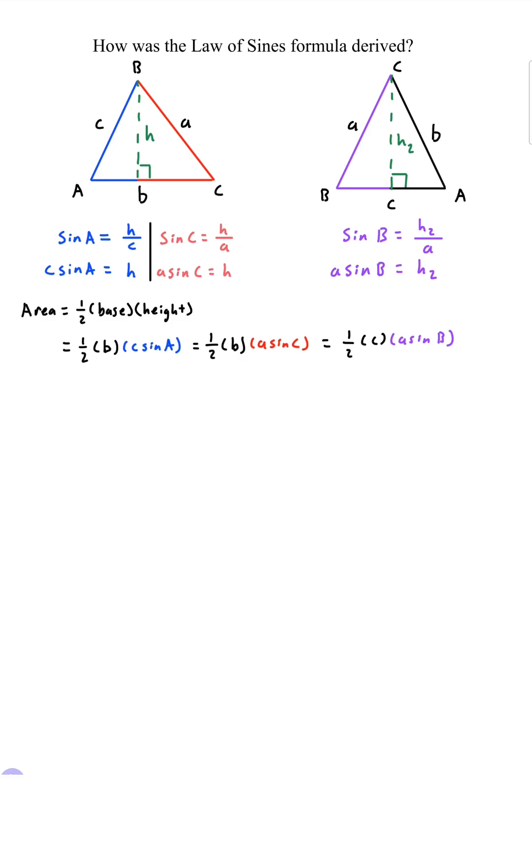Now we notice all three of these have a one half in common so let's just multiply both sides by two just to get rid of it. So we have bc sine of A equals ba sine of C equals ca sine of B. Now let's divide both sides by abc.